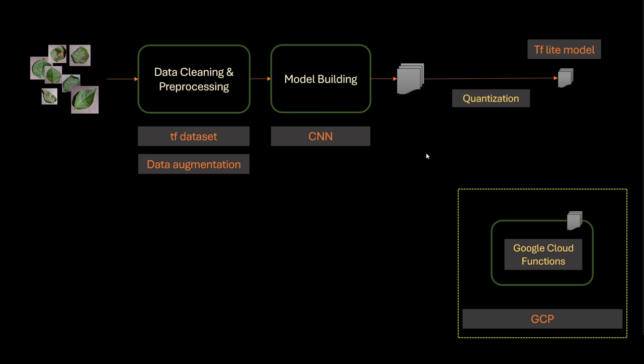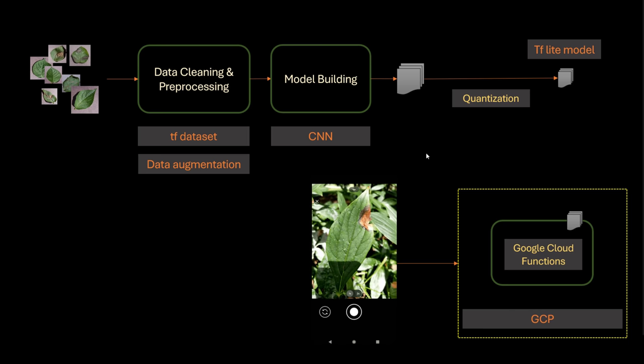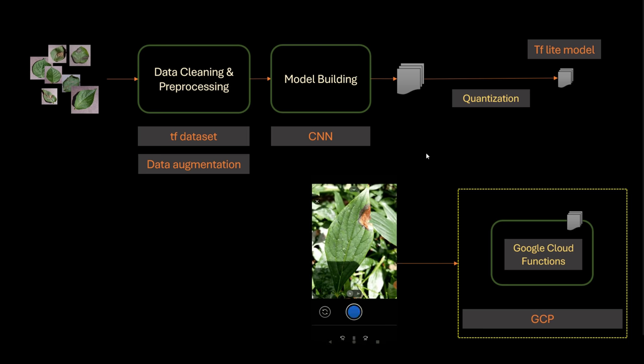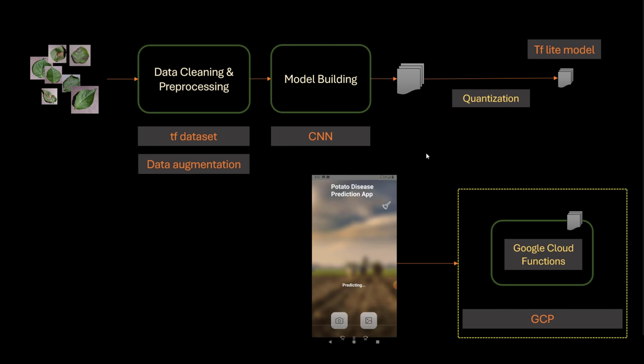Once we have exported TF Lite models, then we will deploy those to Google Cloud and we'll write Google Cloud Functions, which are similar to AWS Lambda if you have heard about serverless architecture and AWS Lambda. So Google Cloud Functions are kind of like that, and then these functions will be serving our cool mobile application.